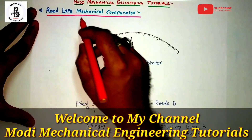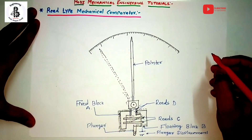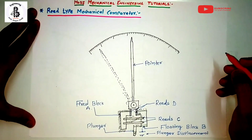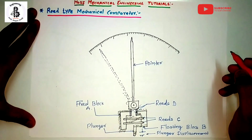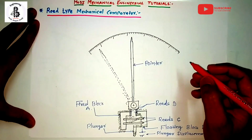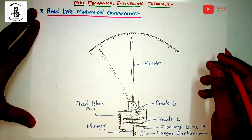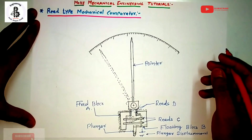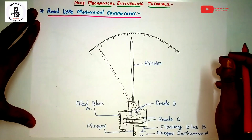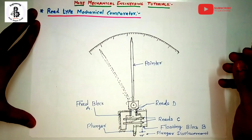Welcome to my YouTube channel Modi Mechanical Engineering Tutorials. In this video I would like to explain about reed type mechanical comparators. Basically, comparators are used to measure only the difference with respect to standard measurements — that is the basic principle of any kind of comparator. For a detailed study, you should refer to the link given in the description for the basic characteristics of comparators.